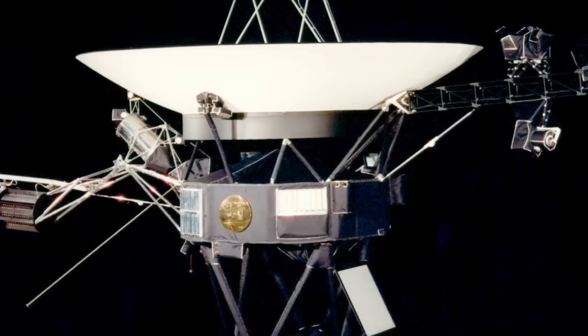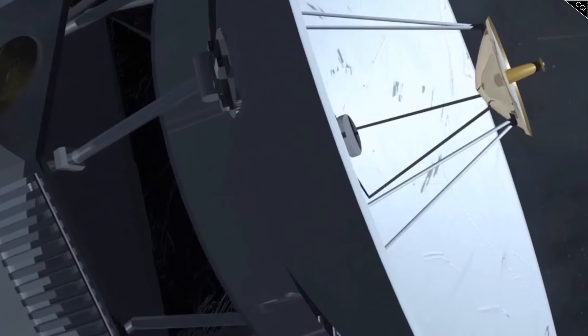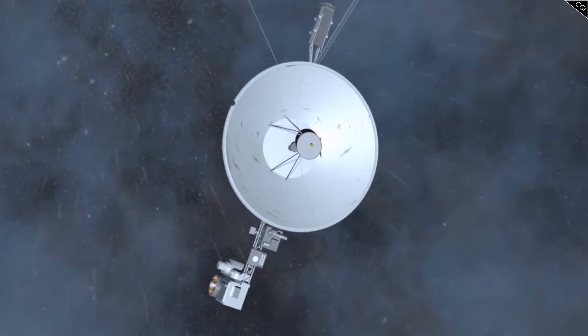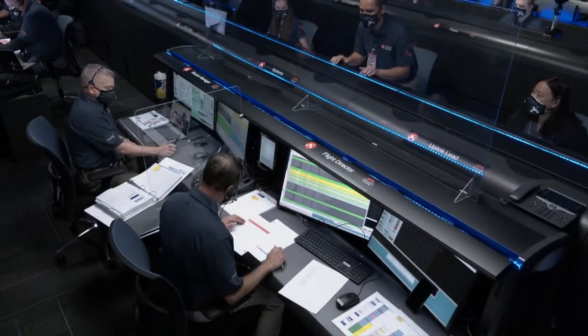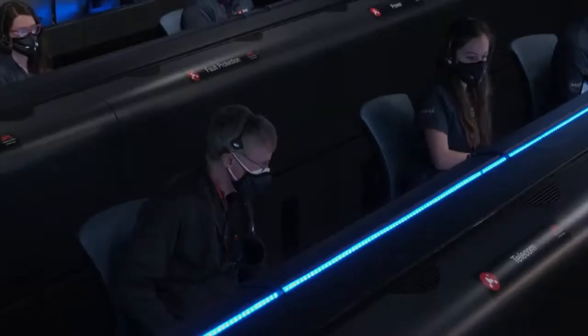The AACS, the Attitude, Articulation, and Control System. This computer is one of three on Voyager 1, and its job is to make sure the spacecraft's large 3m antenna continues to point towards Earth. This AACS has stopped sending coherent data.